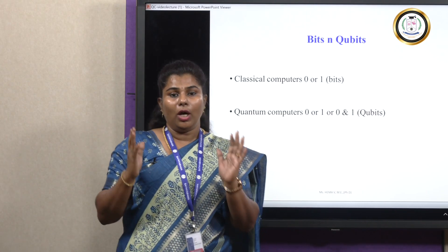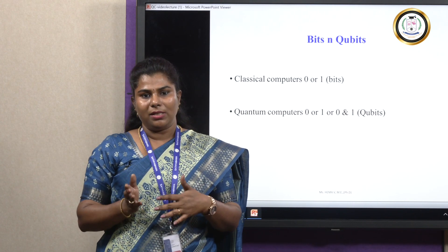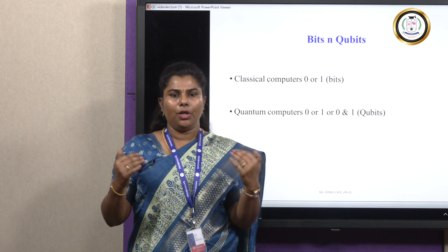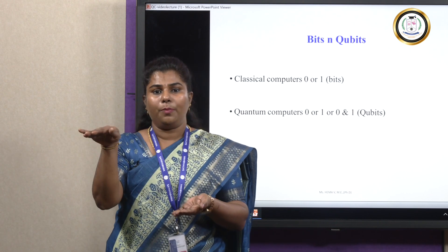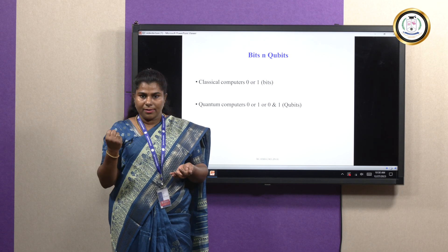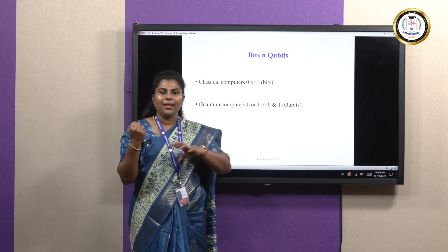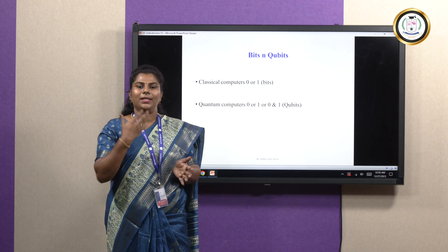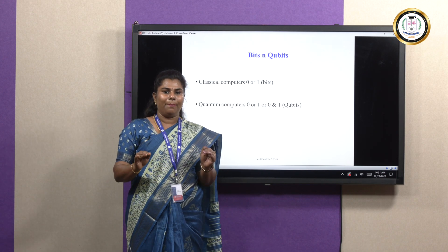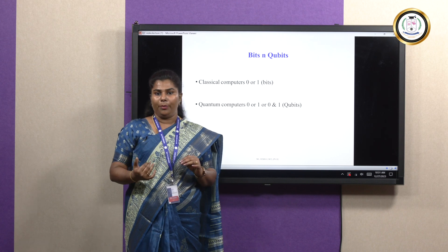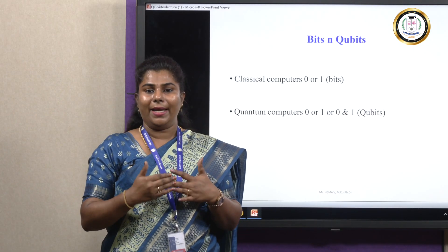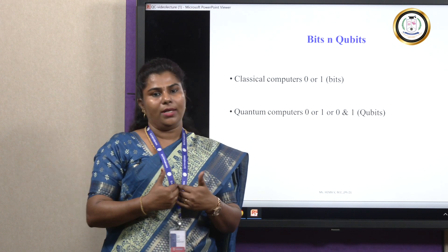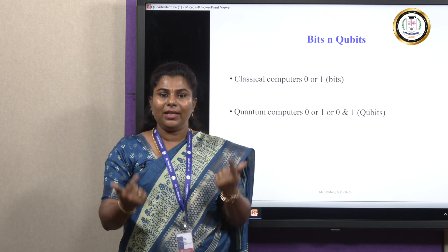Whereas if you use a quantum computer, all the possible solutions — 00, 01, 10, and 11 — will be in the superposition state simultaneously. The quantum computer picks 11 as the input and unlocks the lock instantly. So a normal classical computer takes 4 seconds to solve the problem, whereas our quantum computer solves it within a second, because all possibilities exist at the superposition level.